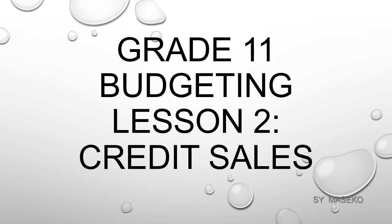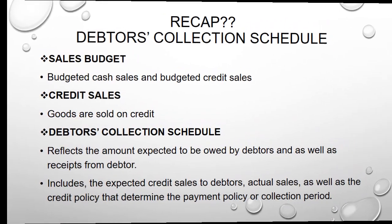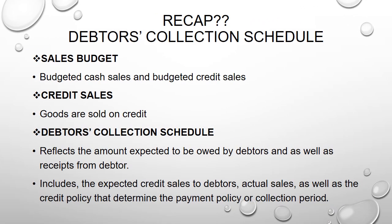Welcome back to my channel. Today's lesson is still based on grade 11 budgeting. Today we want to look at how one can do a debtor collection schedule. We're saying that a sales budget can be made up of cash sales as well as credit sales, so today I want us to focus on credit sales. Credit sales are goods that are sold on credit.